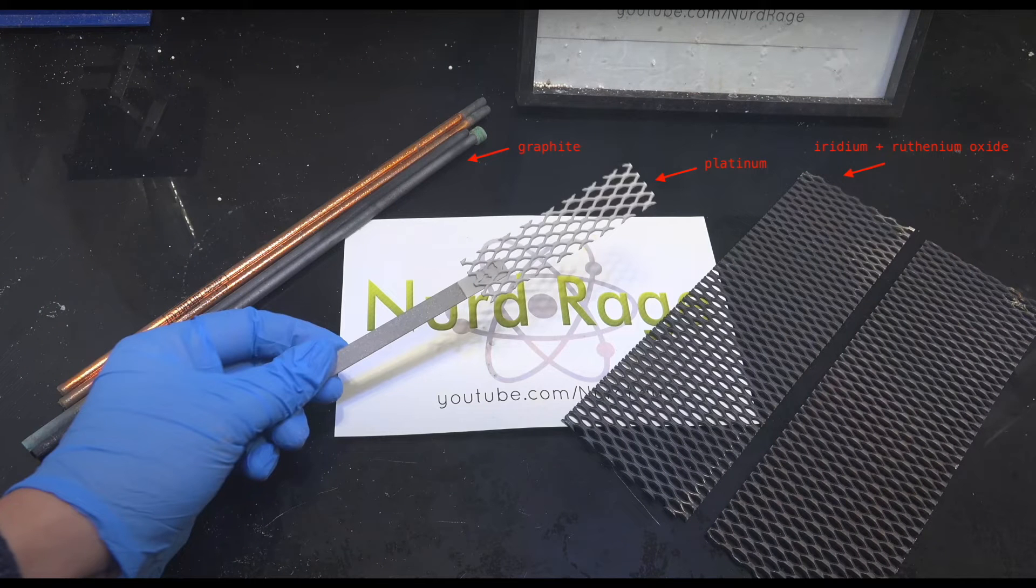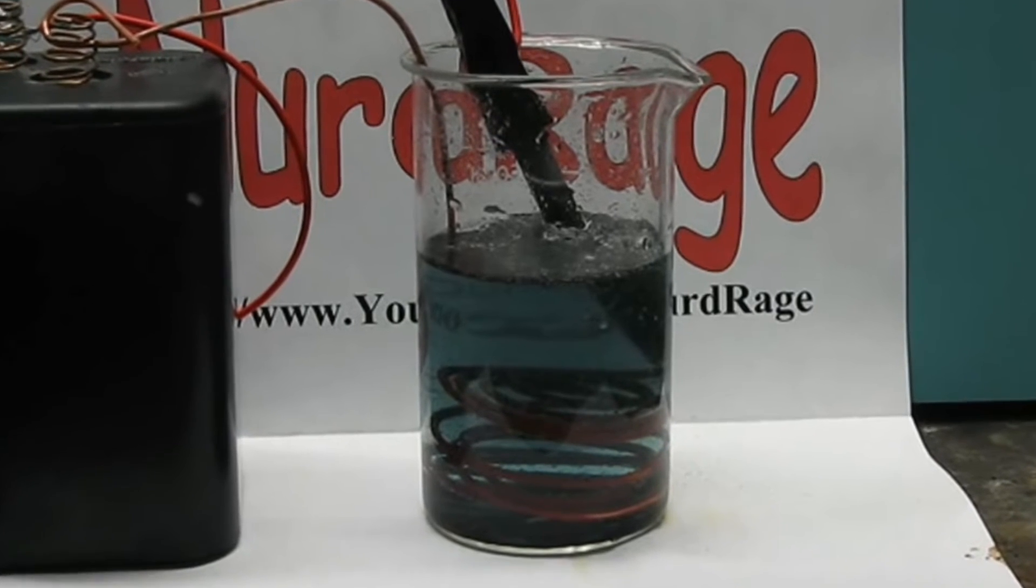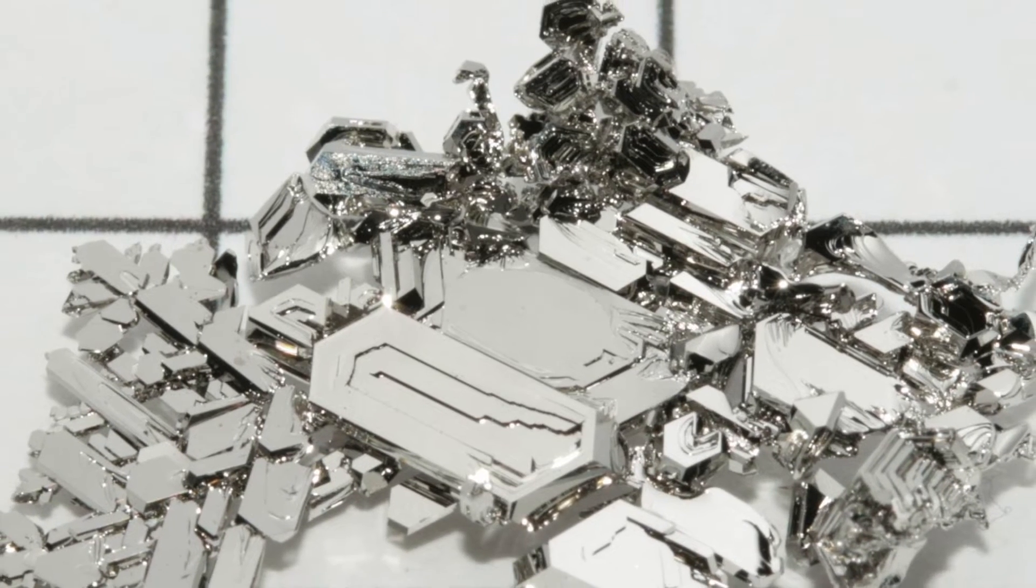Common anode materials are graphite and platinum, but graphite contaminates the solution with tiny particles of it, while platinum is obviously very expensive.